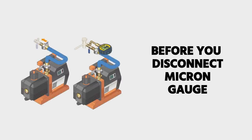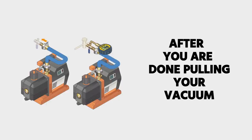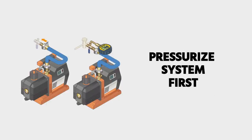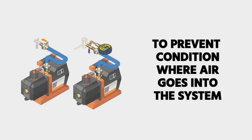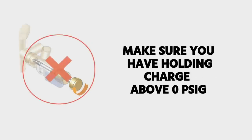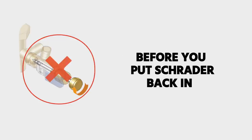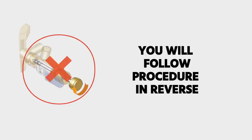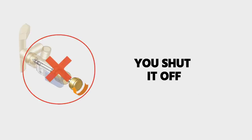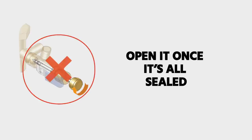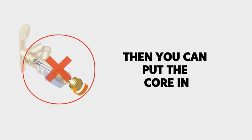Before you disconnect the micron gauge or change anything after you're done pulling your vacuum, you want to make sure to pressurize the system first. That way you are not going to have a condition where air goes into the system. You want to make sure that you have a holding charge above zero PSIG before you go ahead and put that Schrader back in. And of course, it's safe to do because you're going to follow that procedure in reverse, where you shut it off, you put the Schrader in, and then you open it once it's all sealed, and then you can put the core in.